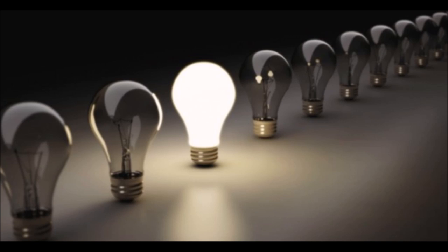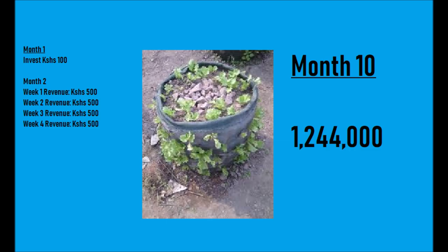I want to excite you further. Remember the first idea I gave you — vertical sack farming. Of all the ideas I gave you, the vertical sack farming is one I have been able to prove: 100 shillings will give you a return of not less than 500 shillings on your first harvest. With spinach you can harvest daily, but for practical purposes let us say you harvest weekly — that gives the leaves enough time to regrow so that you can harvest almost the same quantity as the week before.